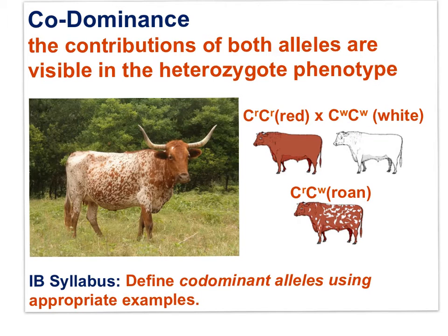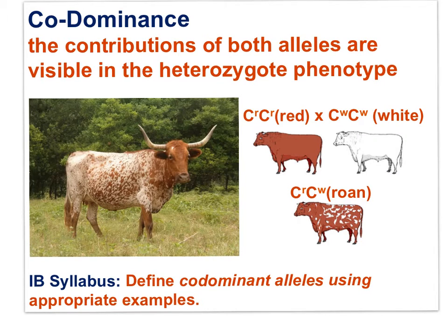Pay close attention to this example. A red female cow is mated to a white male bull. These parents have offspring with a color called roan. All of the offspring of these two parents would be roan. The intermediate color comes from some hairs being red while other hairs are white. Both alleles in the heterozygote are contributing to the heterozygote phenotype: roan.